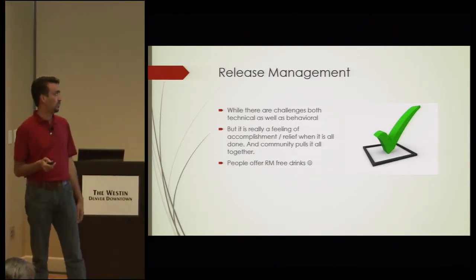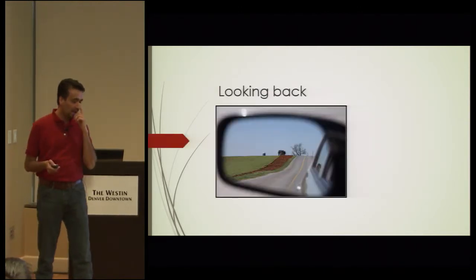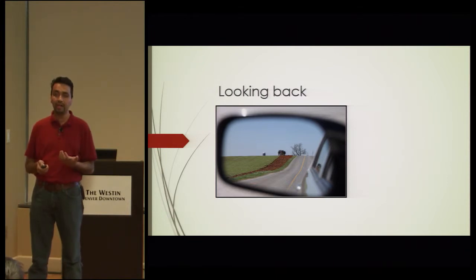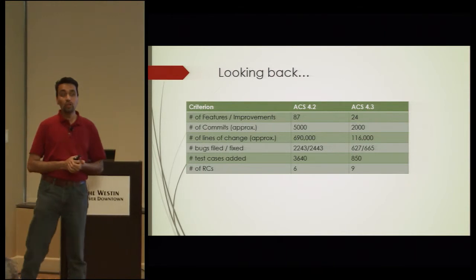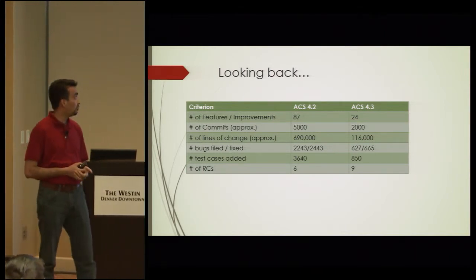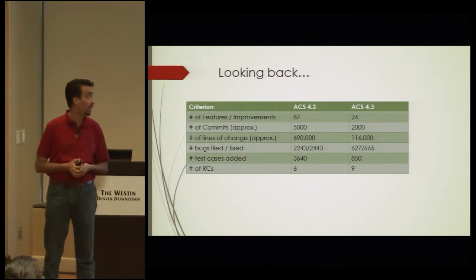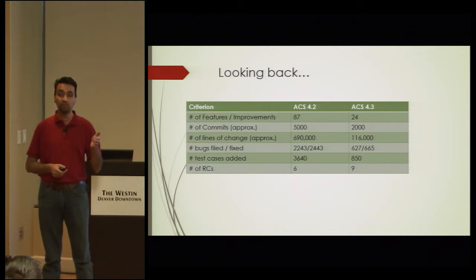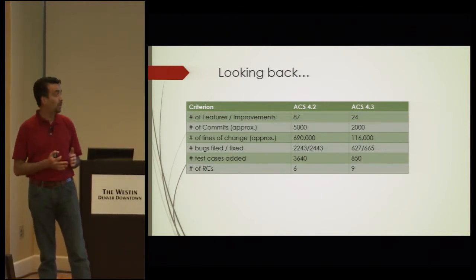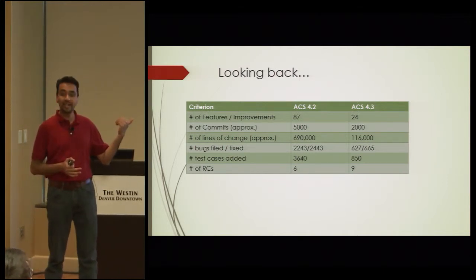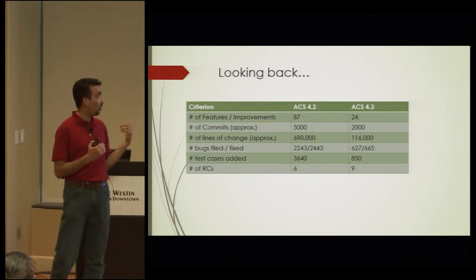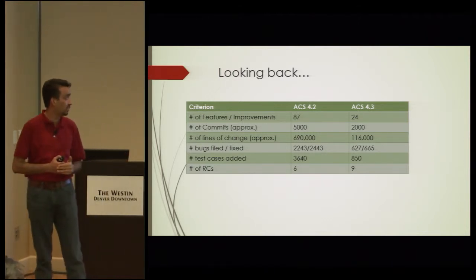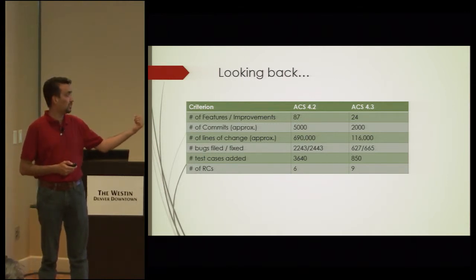I wanted to look back and compare the two releases I was responsible for. ACS 4.2 was the biggest release we had done — almost 5,000 commits, almost 690,000 lines of code changed, which is really huge. There were about 2,200 bugs across all features plus prior releases, and we managed it in six RCs. For 4.3, I was very confident given my experience with 4.2, but it took a long, long time — it was almost one-fifth the size of the prior release yet took much longer.